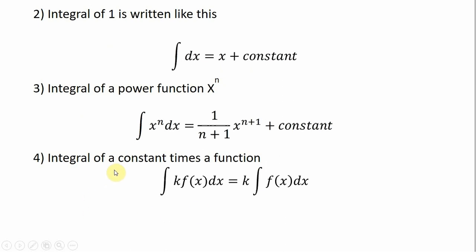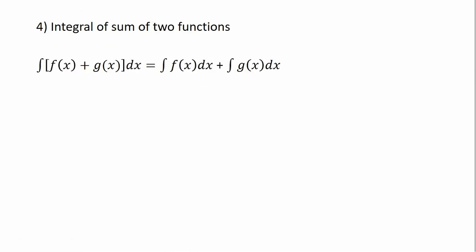The integral of a constant times a function: we can bring out the constant in front of the integral sign and then just take the integral of f(x), then multiply it back through by k. And for the integral of a sum of two functions — or a difference, where the plus sign would be a minus sign — we can break it down as the integral of f(x) plus the integral of g(x).